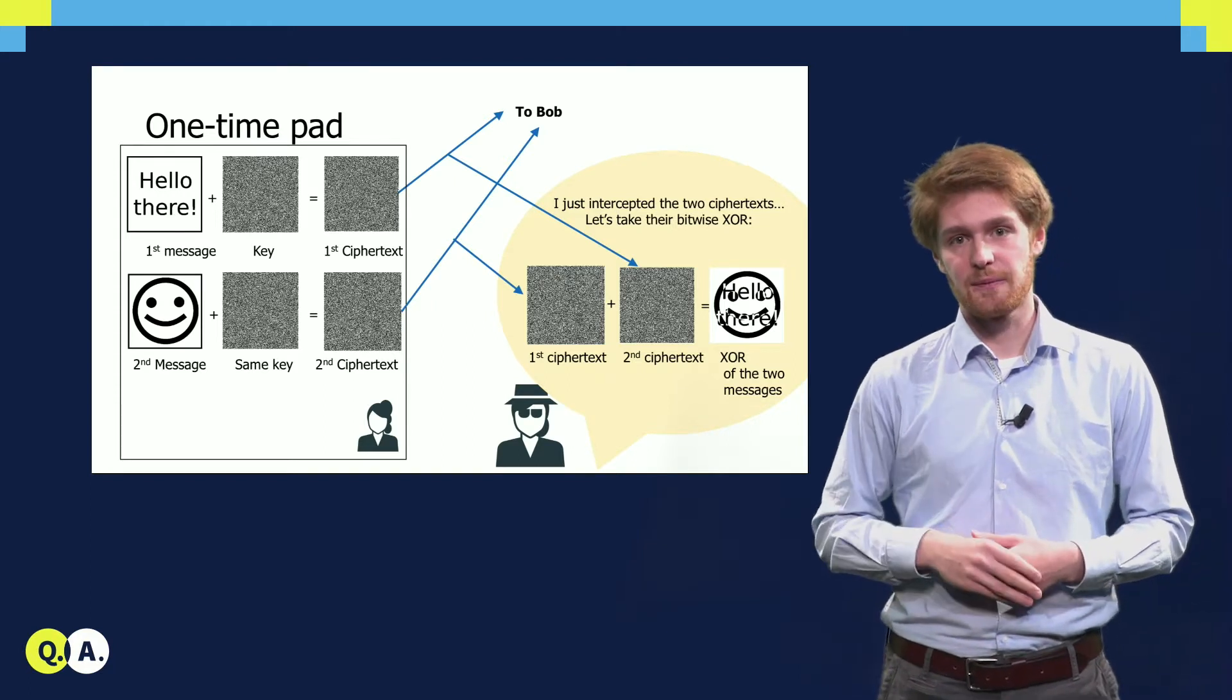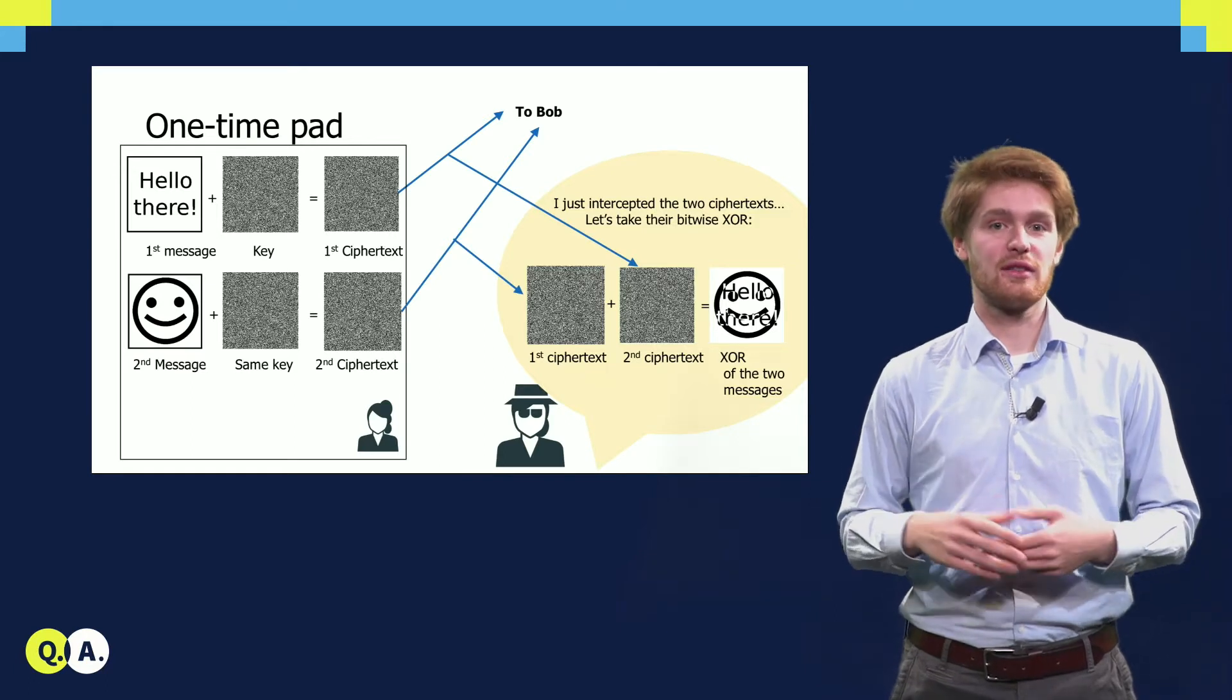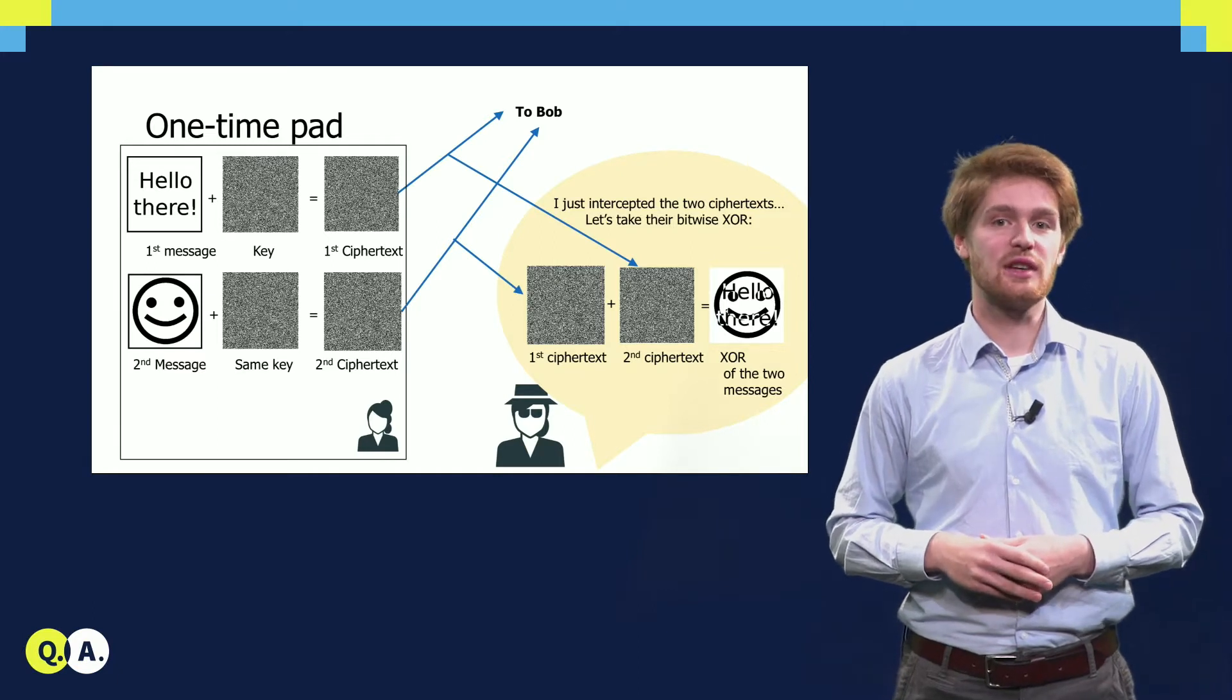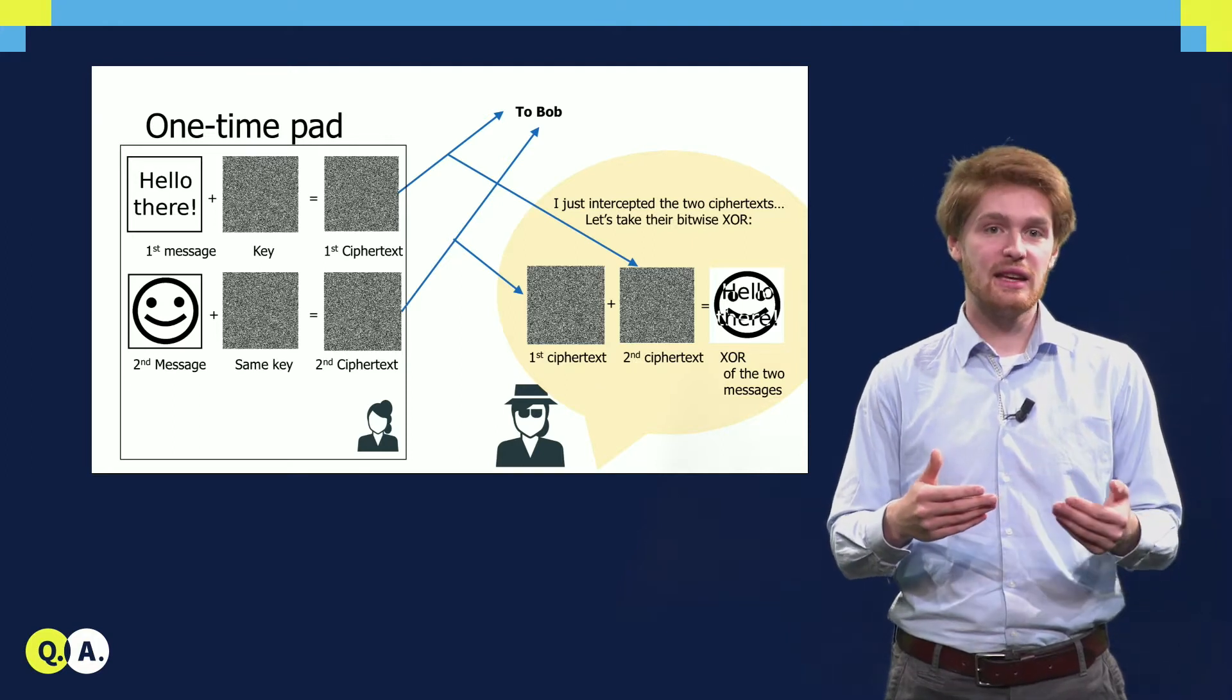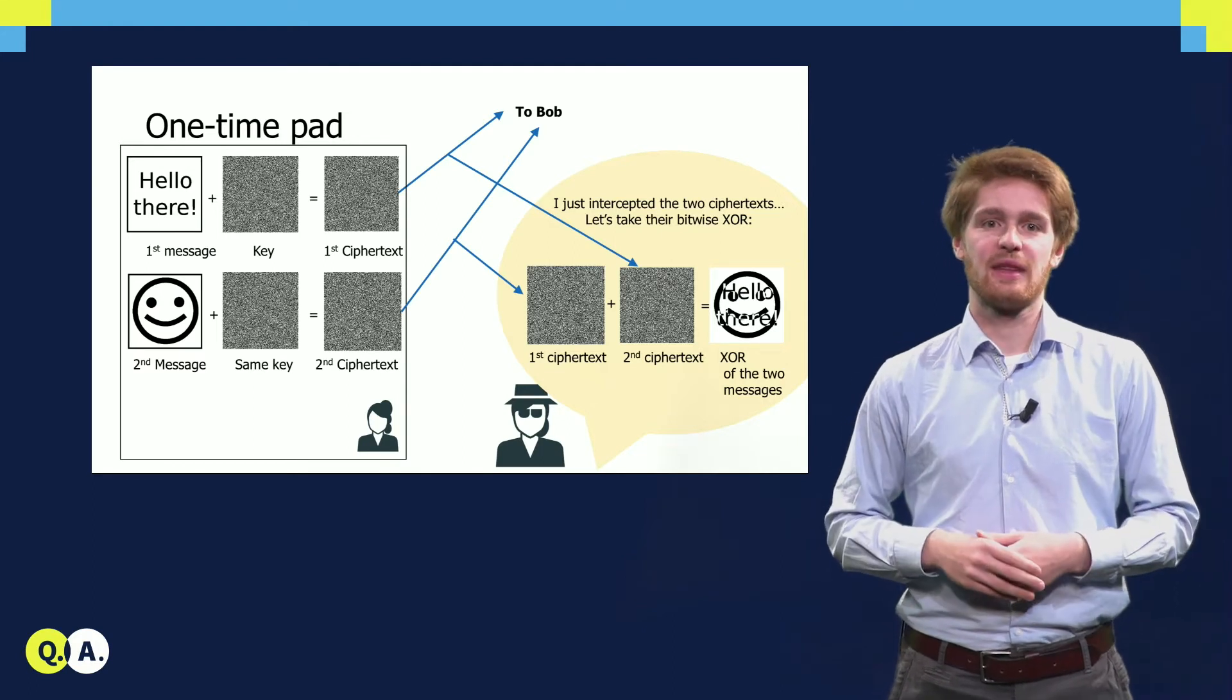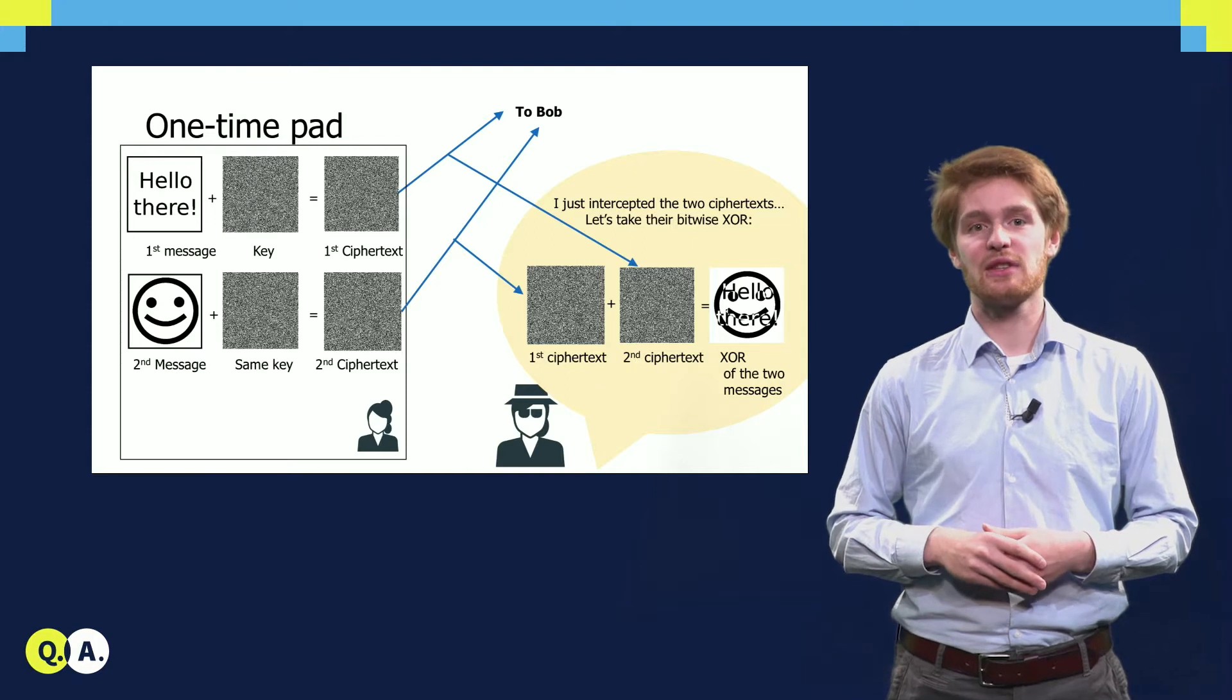But now the situation is very different. Now Eve has two ciphertexts. And by taking the pixelwise-xor of the two ciphertexts, she gets the pixelwise-xor of the two messages, which Eve can now suddenly both read. Again, it might take some thinking why the xor of the two ciphertexts result in the xor of the two messages. The underlying idea here is that adding the two ciphertexts is an addition of the first message, the key, the second message, and the key again. Taking the xor of an image with itself yields a completely white image, so we could also say that the key drops out. The result is the xor of the two messages. I encourage you to try to take a piece of paper and try to work out that the xor of two ciphertexts indeed equals the xor of the messages.